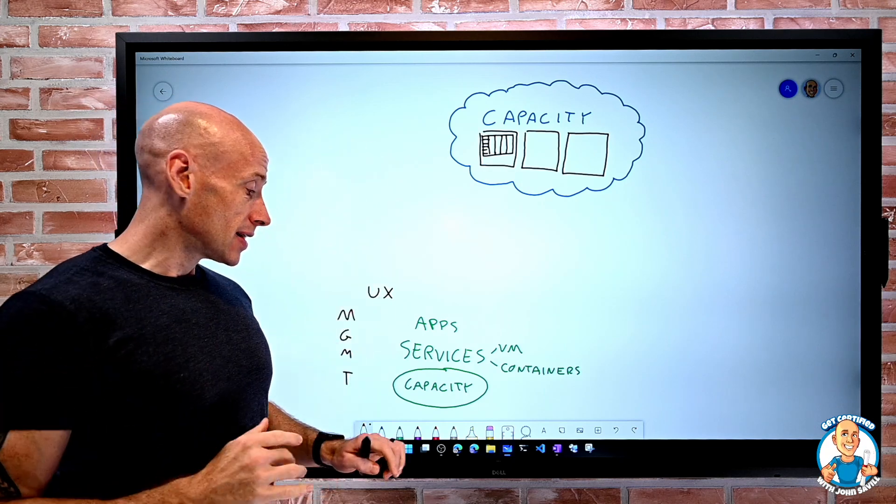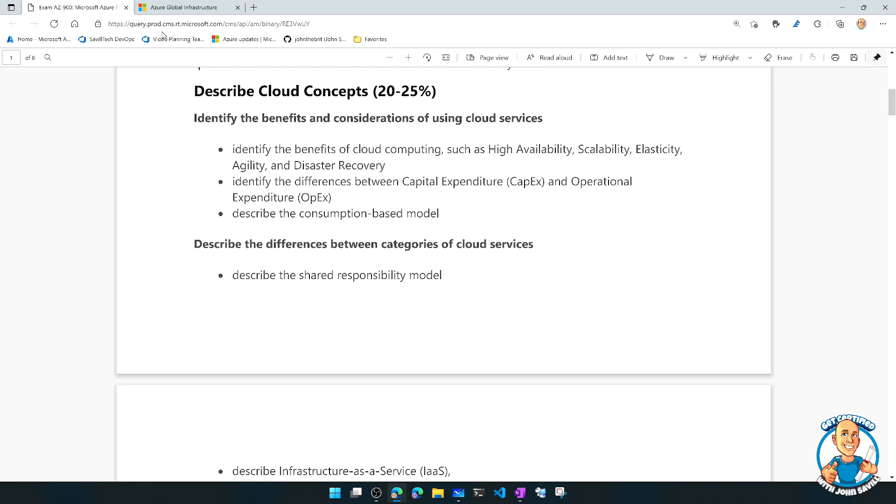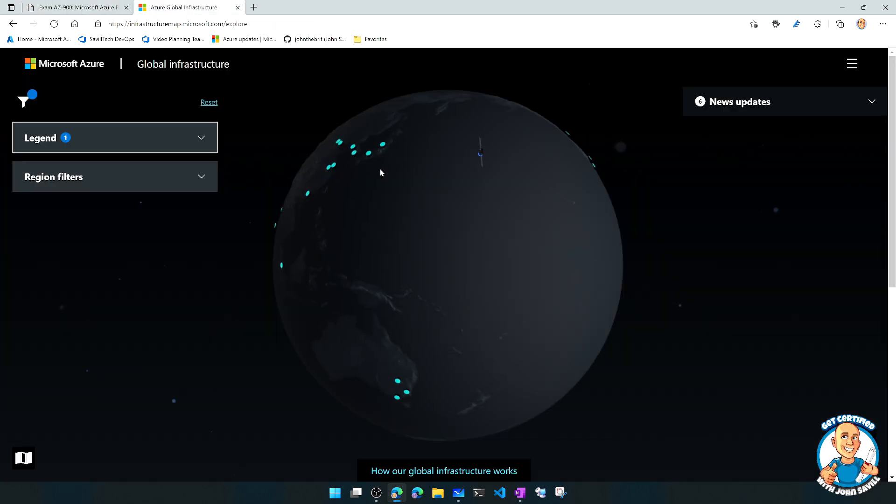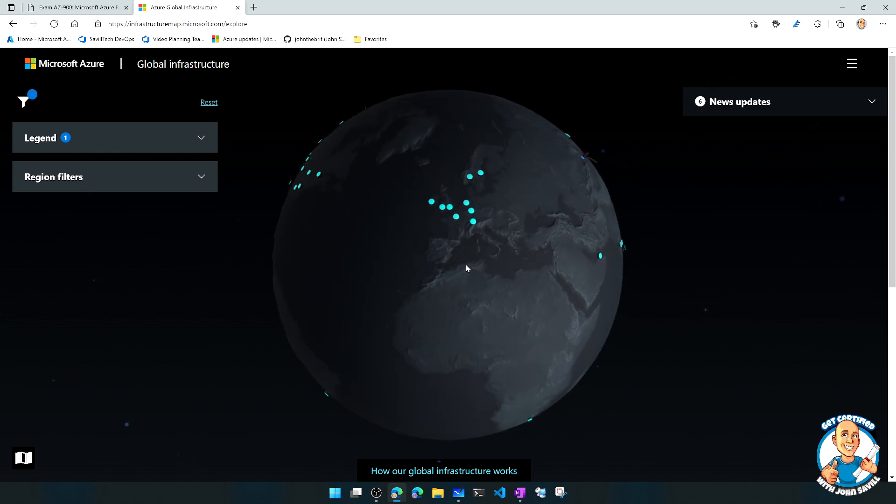And we can actually see, for example in Azure, which is our focus, if we go and look, there's actually a nice little infrastructure global map. And here we can see all the different regions that are available to us.